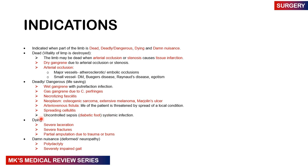Dying tissue includes severely lacerated wounds in the context of trauma, severe fractures, or patients who are partially amputated due to trauma or burns. Damn nuisance indications include deformity or neuropathy — for example polydactyly with extra digits — or severely impaired gait. Most indications seen on surgical wards, however, are due to infections or diabetic feet.